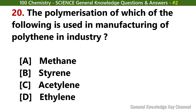The polymerization of which of the following is used in manufacturing polythene in industry? Answer D: Ethylene.